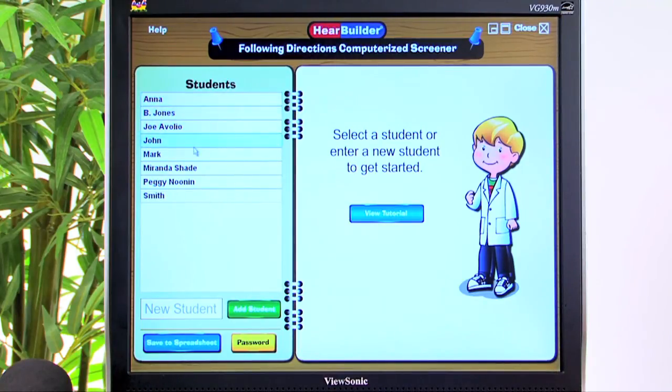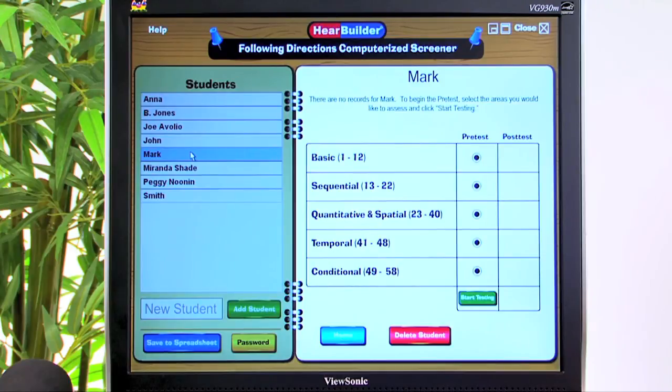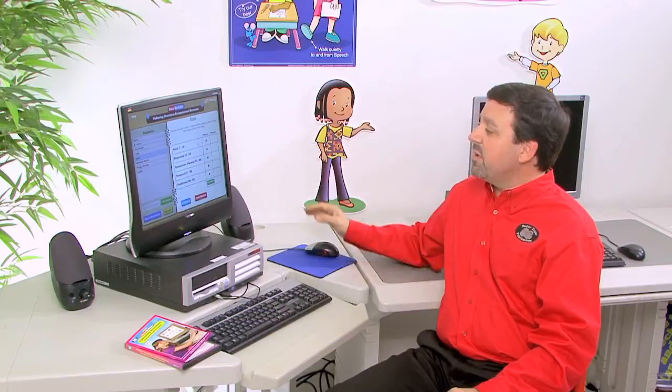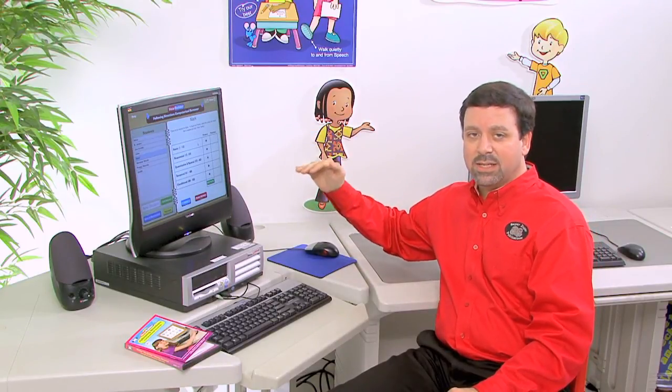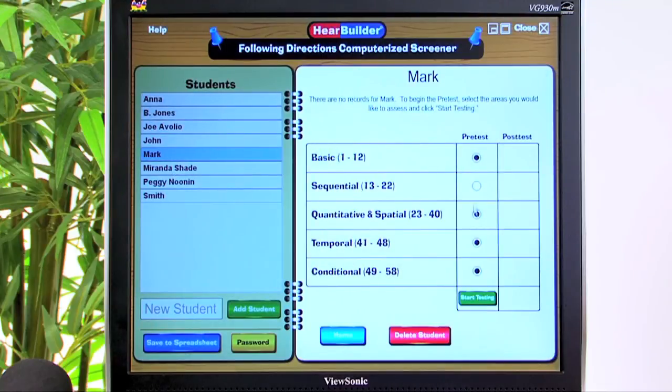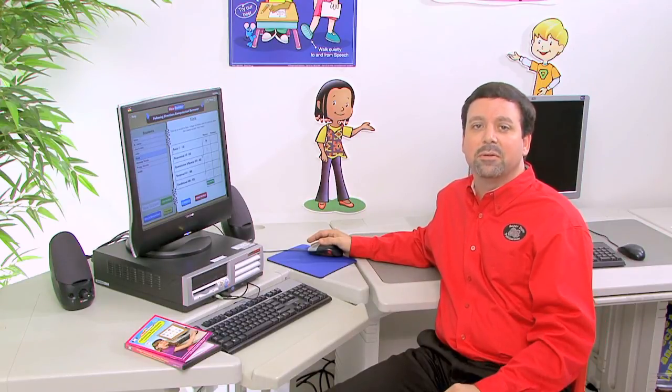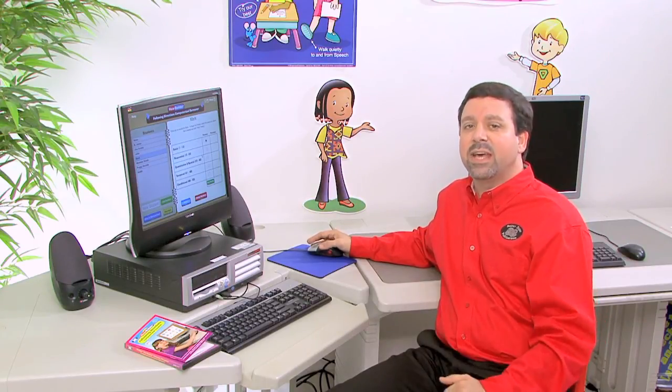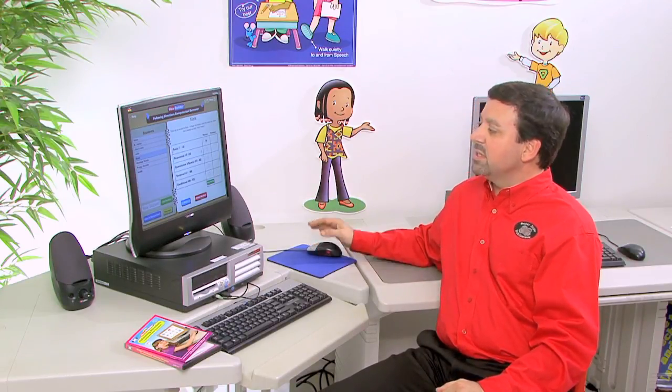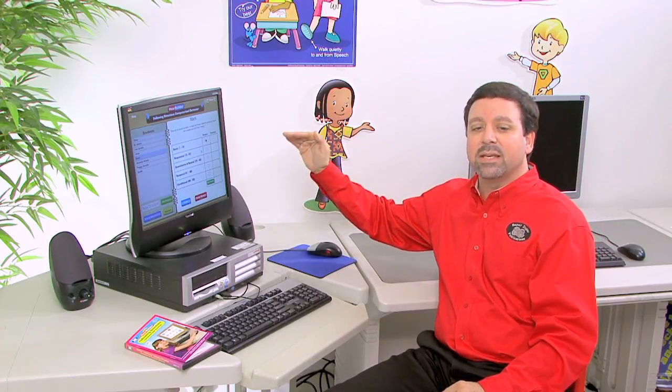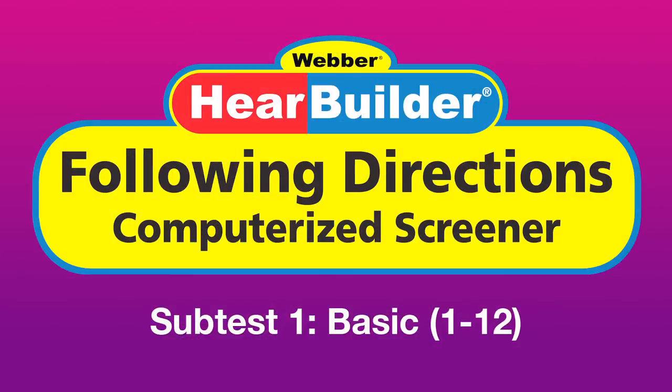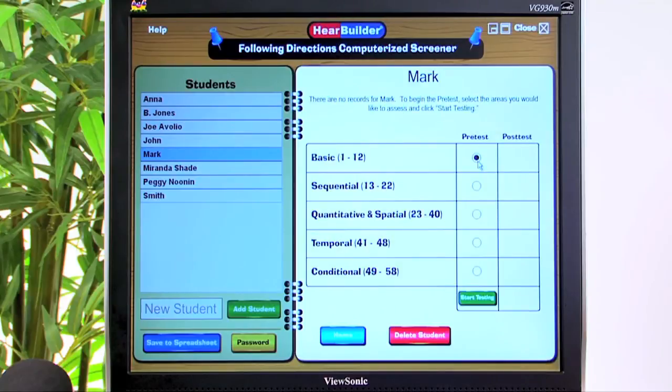So when we're ready to start the assessment, we can select a student's name on the left-hand side. Once we select our student that we're going to do the assessment and the screening with, this will default to have each subtest assessed. With this, we can also take away different subtests if we have a shortened time that we're going to do this screener, or if the student has difficulty focusing his attention to the task at hand. So for instance, let's take a look at some of the examples from the Basic Directions subtest.